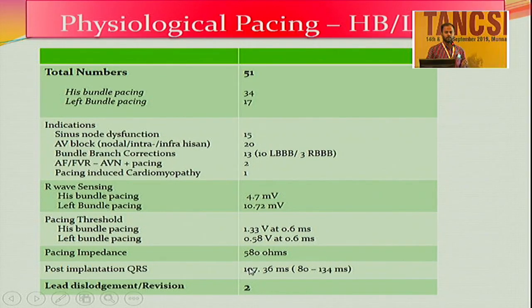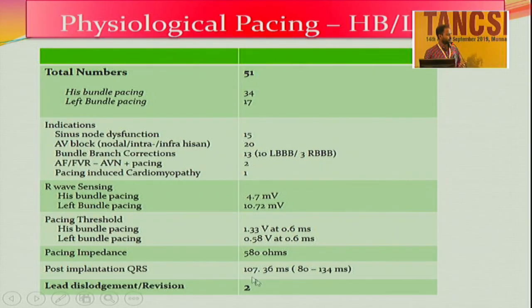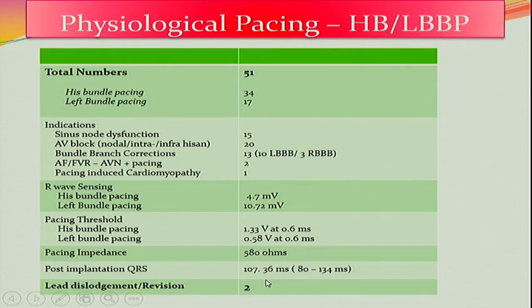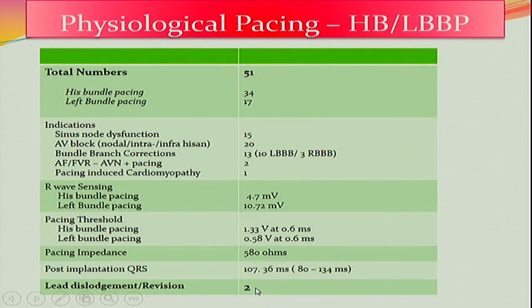Left bundle pacing has an excellent threshold — it can reach as low as 0.2V. I had an average of 0.58V at 0.6ms pulse width; impedance is also good. Most striking is the post-implantation QRS duration: pacing the RV myocardium or RV septum gives a QRS of around 130–140ms, but in my 51 cases the average post-implantation QRS was around 107ms. His bundle pacing is not without complications — the best articles show about 5–7% lead revision rates. I had two lead dislodgements in my initial 10 cases, accounting for about 4% of total cases.